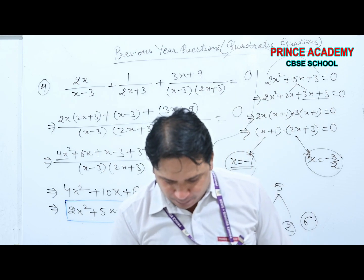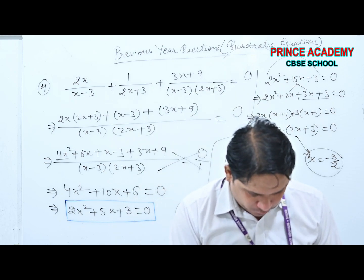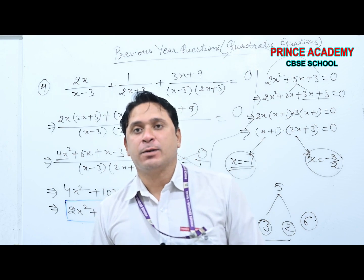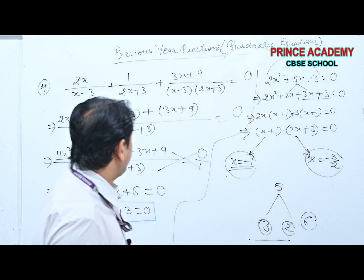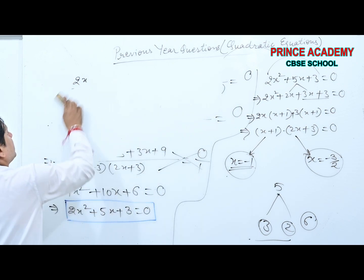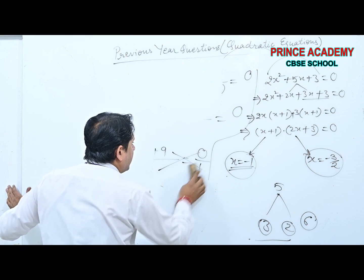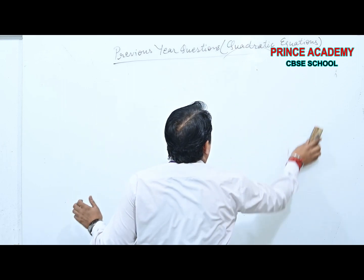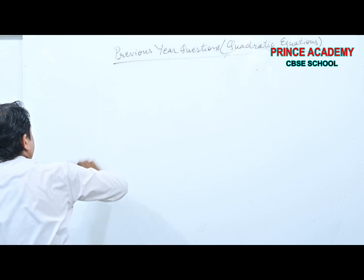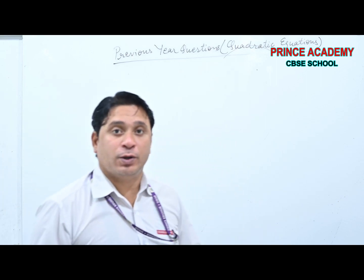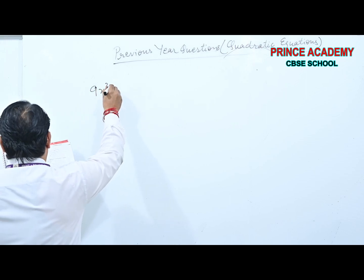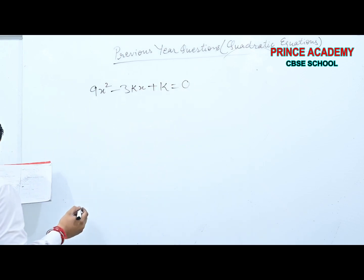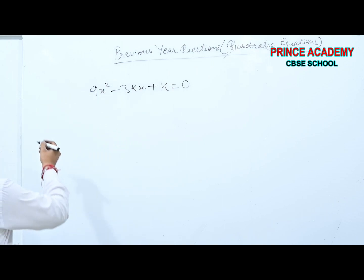We have discussed two types of questions. Now moving to the next type, which is frequently asked by CBSE. Short answer type questions and one-mark questions also appear now. Question 5: 9x² − 3Kx + K = 0. Find K if the roots are equal.